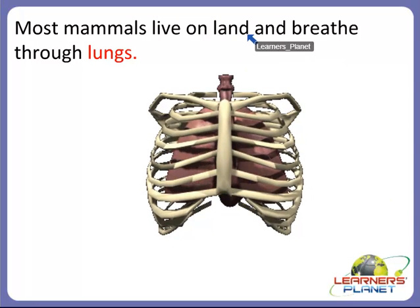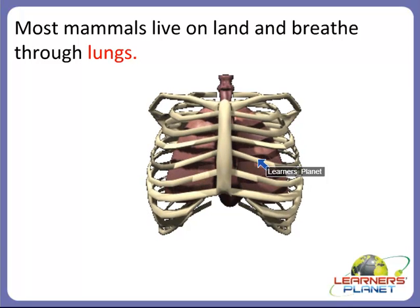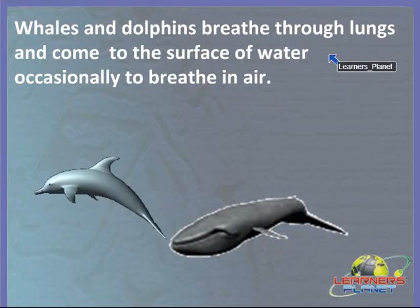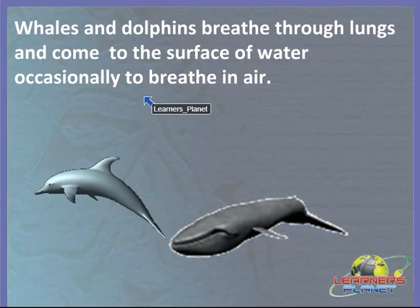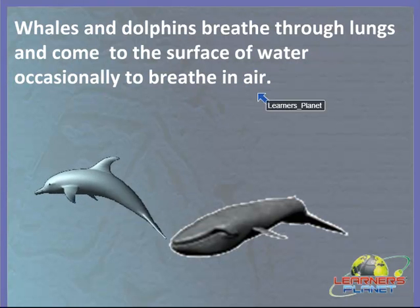Most mammals live on land and they breathe through lungs. Just like we human beings live on land and breathe through lungs, most other mammals also breathe through lungs. Whales and dolphins are also mammals — they also breathe through lungs, but they first come to the surface of the water occasionally to breathe in air, and then go back into the water.